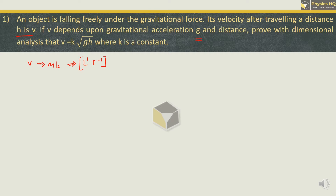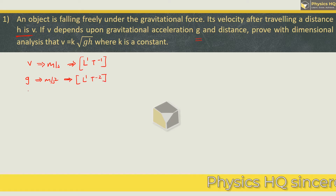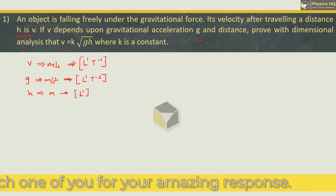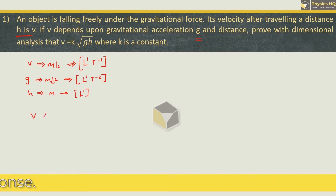When you bring it to the numerator it will become minus 1. g has unit meter per second square — this is acceleration due to gravity — and this will give us dimension L¹T⁻². And lastly we have distance h which will have unit meter, so we get L¹. Now let us assume that v is directly proportional to g and h and we don't know the powers of g and h, so let us take variable a for g and b for h.